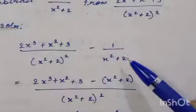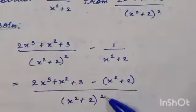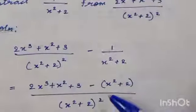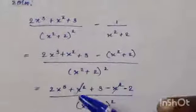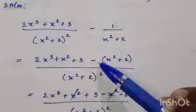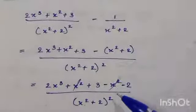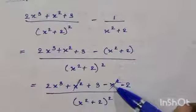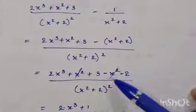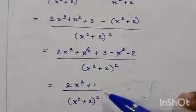Now compare the second denominator (x-squared plus 2) with the new common denominator (x-squared plus 2) whole square — one more (x-squared plus 2) is needed. So multiply 1 by (x-squared plus 2). Now take (2x-cubed plus x-squared plus 3) minus (x-squared plus 2), distributing the minus: minus x-squared minus 2, all divided by (x-squared plus 2) whole square. The x-squared terms cancel. Simplify the constants: 3 minus 2 is 1, giving (2x-cubed plus 1) divided by (x-squared plus 2) whole square.